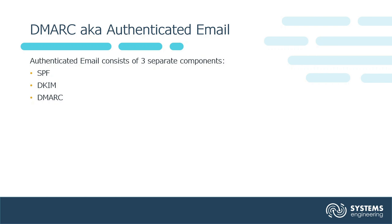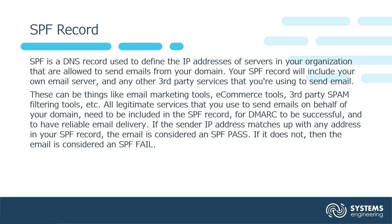There are three components that need to be in place within your organization to fully implement DMARC. The first is an SPF record, which is a DNS record used to define the IP addresses of servers in your organization that are allowed to send emails from your domain. Your SPF record will include your own email server and any other third-party services that you're using to send email, such as email marketing tools, e-commerce tools, third-party spam filtering tools, etc. All legitimate services that you use to send emails on behalf of your domain need to be included in the SPF record for DMARC to be successful and to have reliable email delivery.